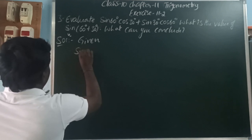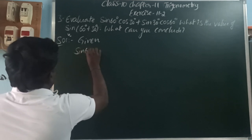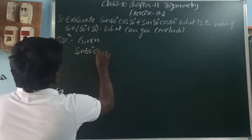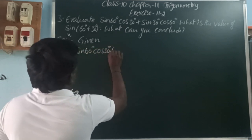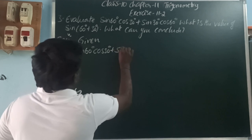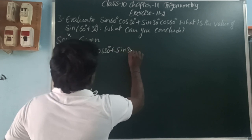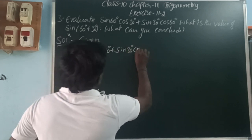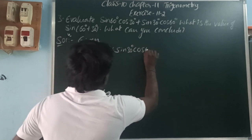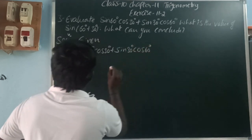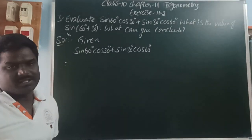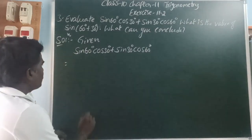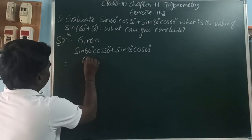sin60·cos30 + sin30·cos60. So here, sin60 is how much? Root 3 by 2.